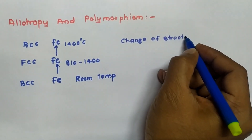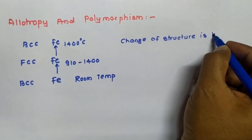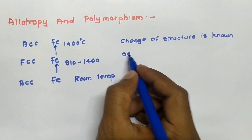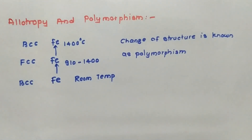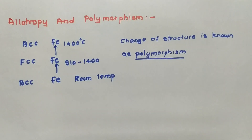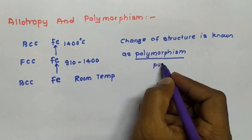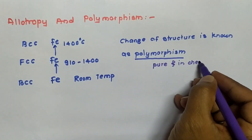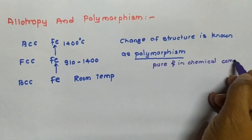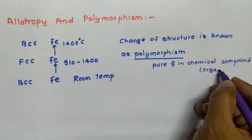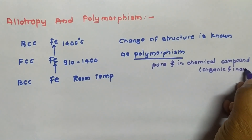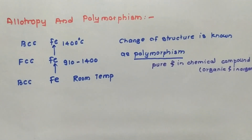Polymorphism is observed in pure substances as well as in chemical compounds — both organic and inorganic.